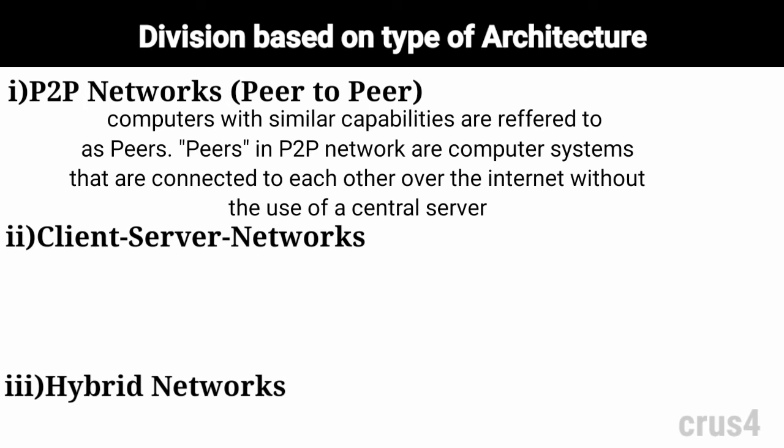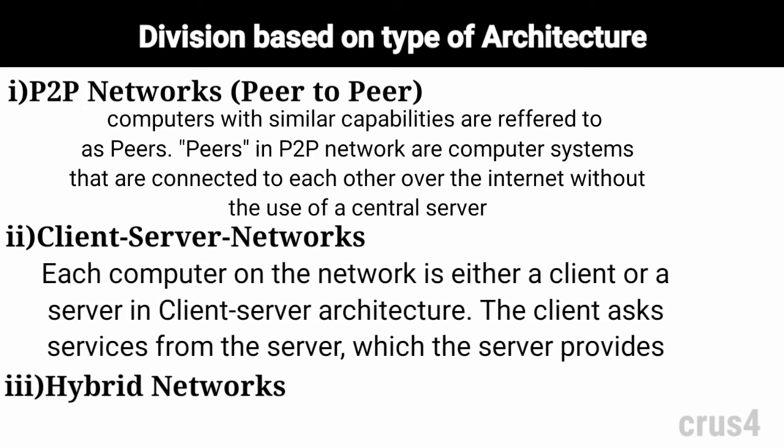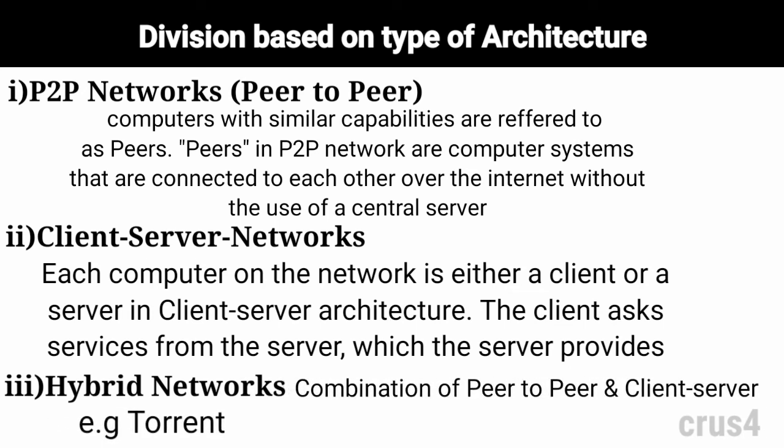Client-server networks: each computer on the network is either a client or a server in a client-server architecture. The client requests services from the server, which the server provides. Servers are high-performance computers or processors that manage file sharing, printers, or network traffic. Hybrid networks: the hybrid mode refers to a network that uses a combination of client-server and peer-to-peer architecture, for example, Torrent.